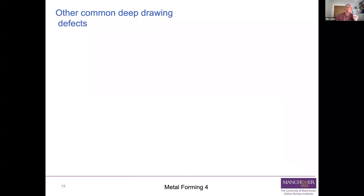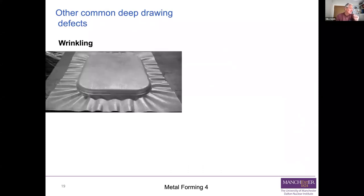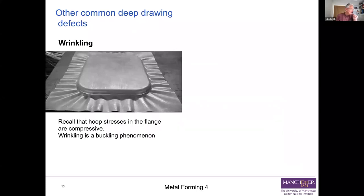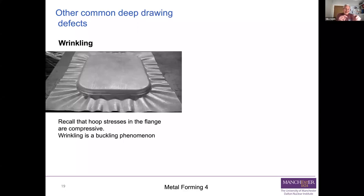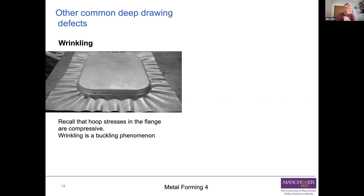Here's wrinkling. This happens because you get compressive hoop stresses - compressive circumferential stresses in the flat part of the blank - because you're pulling it radially and each element is getting in the adjacent elements' way as the circumference falls. Whenever you have compressive stress, you can have buckling, particularly in thin components. And you can see it has buckled between the blank holder and the die - that's another thing that can go wrong.